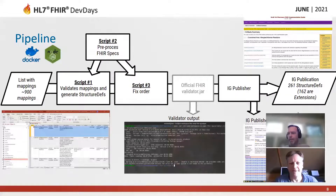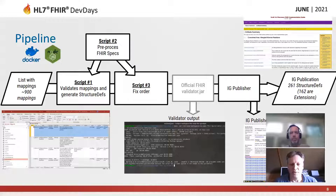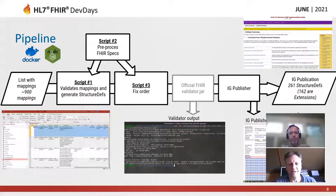I will talk about the solution pipeline that takes the table — a list of around 900 mappings — and converts them into FHIR structure definitions that are then the input for the IG publisher tool. There are a couple of steps in the pipeline, mainly the rectangular things in the diagram. First is getting the list into an easy computable format for the script — we chose Excel XML because it's easy to process. There are three scripts and I'll go into each of them. After generating the 260 or so structure definitions based on the 900 mappings, I often use the official FHIR validator to check the output before running the IG publisher.